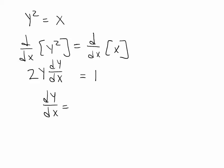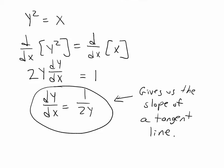Isolate your derivative, and now you have a formula for the slope of a tangent line. Remember I said we could have broken up the curve into two separate pieces.